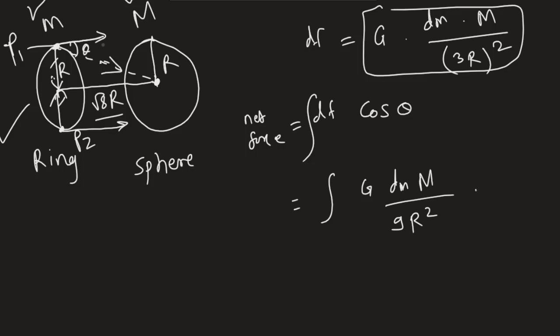9r square into cos theta. How can we calculate cos theta? cos theta is going to be this side, which is square root of 8r, divided by this side, which is 3r.